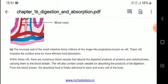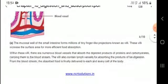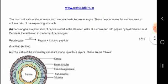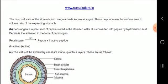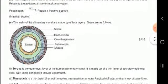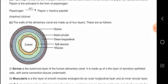Villi increase the surface area for absorbing the maximum nutrients from the food. Pepsinogen is the inactive form of pepsin stored in the stomach. It is converted as: pepsinogen + HCl → pepsin + inactive peptide.